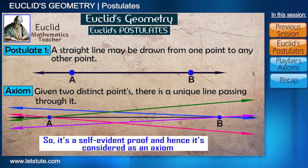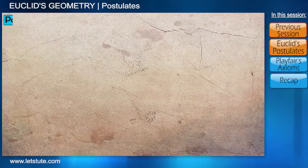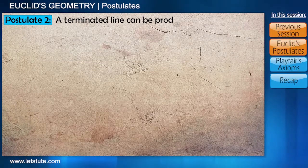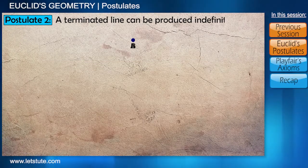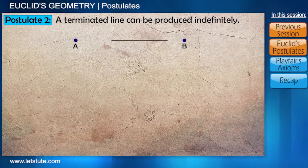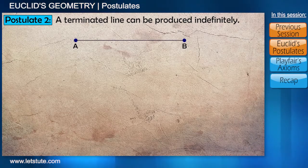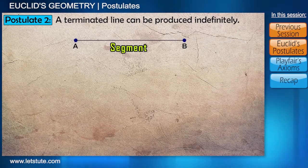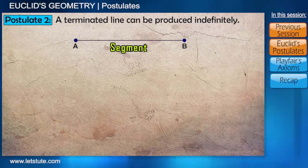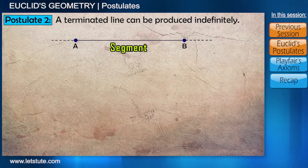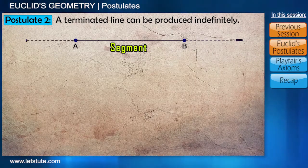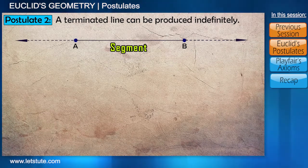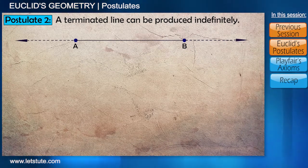Let's have a look at a few other postulates by Euclid. A terminated line can be produced indefinitely. Now, we do not have any terminated line as such — we call it a segment. And we know that a segment can be produced indefinitely on either side, because we only consider the length in between the two points.